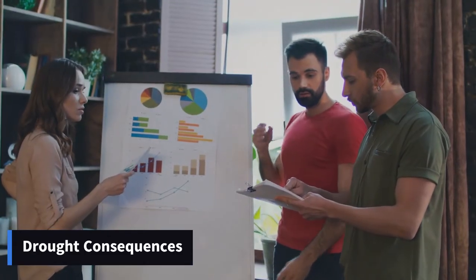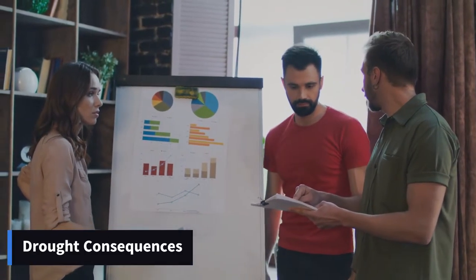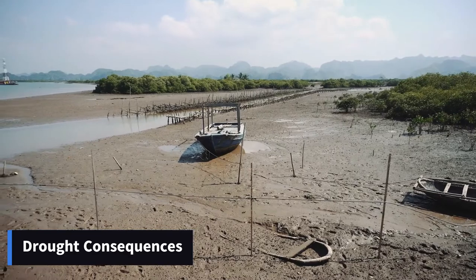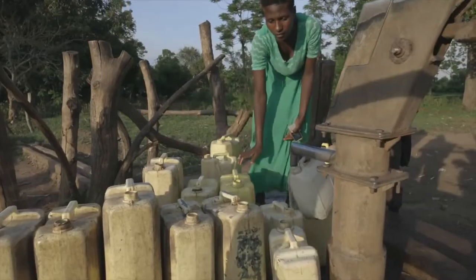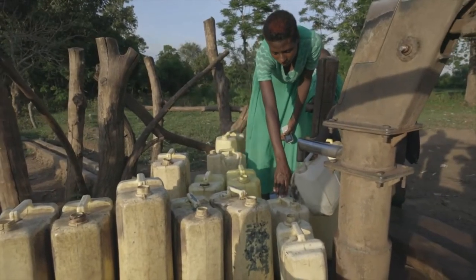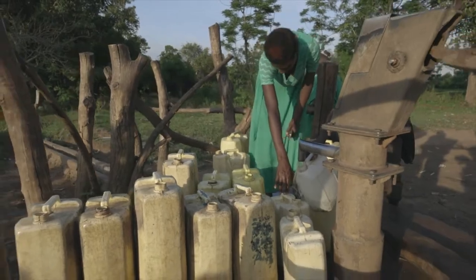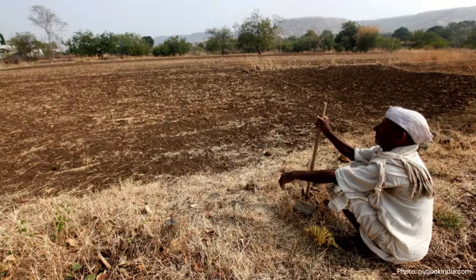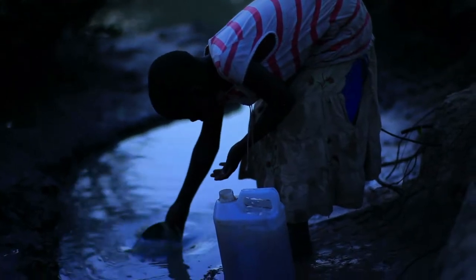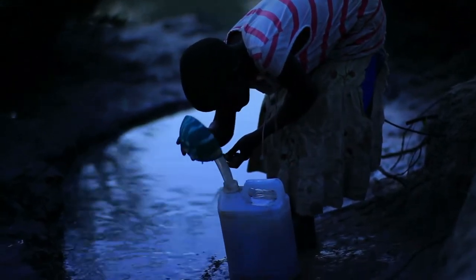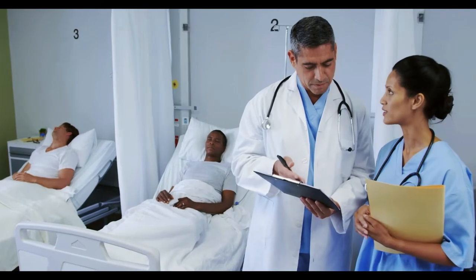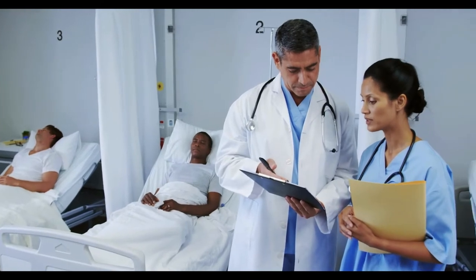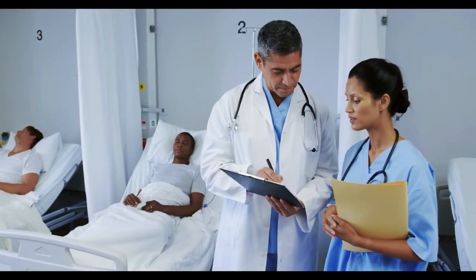Droughts can cause serious economic and social problems as well as devastating effects on the environment. For human beings, the lack of precipitation has led to water scarcity while destroying food sources and causing famine around the world. Lack of clean water also results in poor public sanitation and personal hygiene, alongside a whole range of life-threatening diseases that can develop as a consequence.